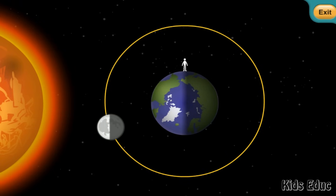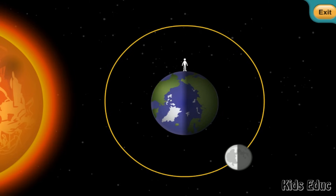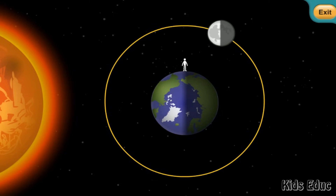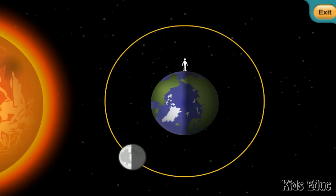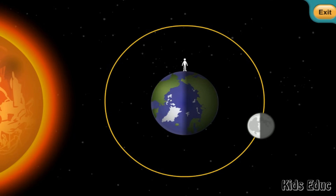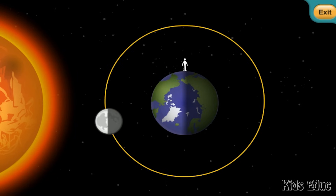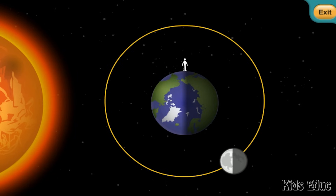The moon looks different to us depending on where it is in orbit. Remember, the moon revolves around the earth once every 29 days — in other words, once a month. As the moon moves around our earth, we see a different part of it lit by the sun.